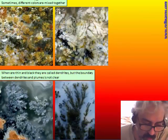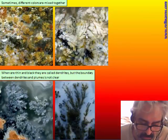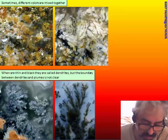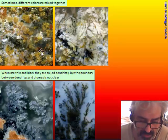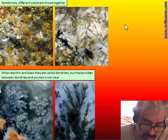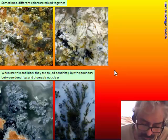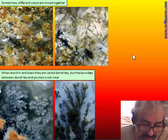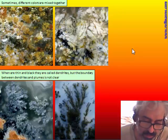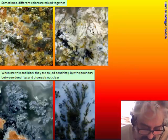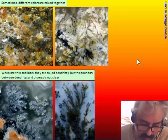In some cases, different colors are mixed together — we can have plumes of white, black, yellow, brown, and green all together. This is because it is not one mineral but a mixing of minerals. The chlorite family makes a very variable palette of color, so we can have montmorillonite, chlorite, and many other minerals that have different colors.